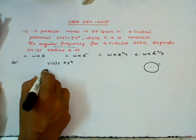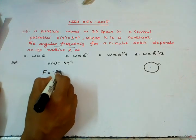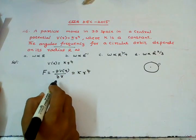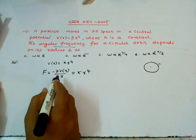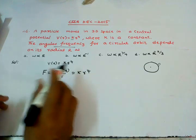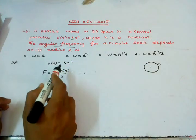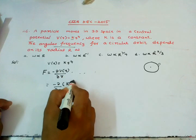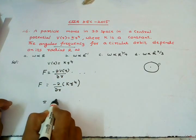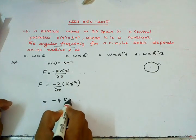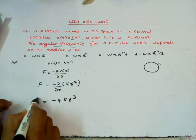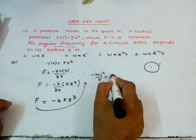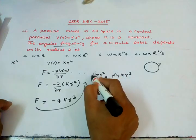Force is nothing but -∂V/∂r. That is equal to... sorry, here the force is -∂V/∂r, so that means -∂/∂r of Kr⁴. That is equal to -4Kr³. So force is -V²/r under central potential, and the force equals Kr³. Minus minus is cancelled.